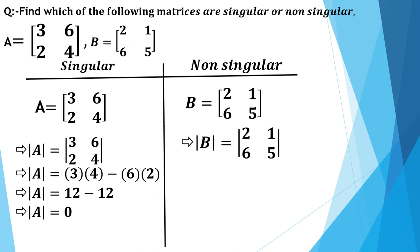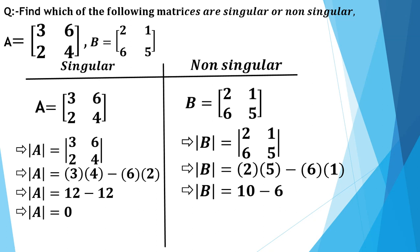Now for matrix B = [2, 1; 6, 5]. Determinant of B: we multiply first and fourth elements (2×5 = 10), minus second and third elements (6×1 = 6). Determinant of B equals 10 minus 6 equals 4, which is not equal to 0. Therefore matrix B is a non-singular matrix.